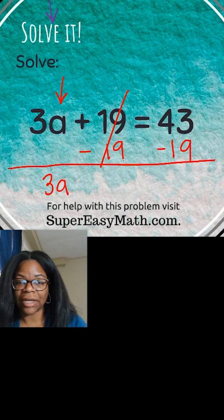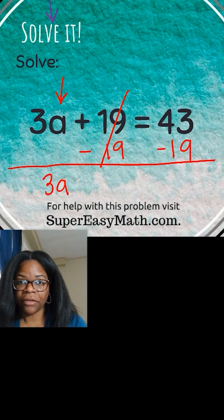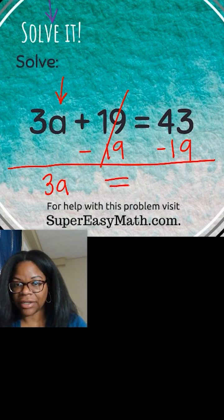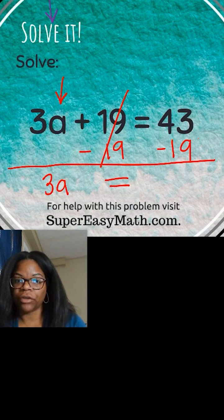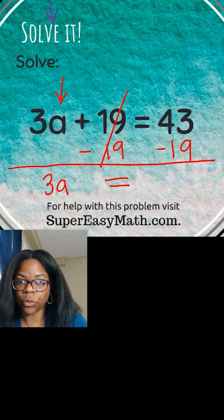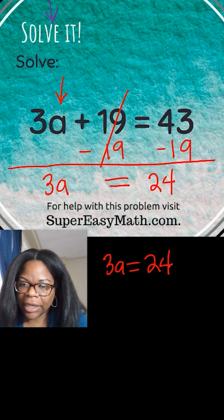The 19 is canceled out, then the equal sign I just bring it down. And then I have the problem 43 minus 19, which is 24. So you write 24.